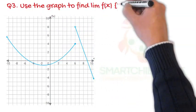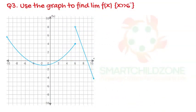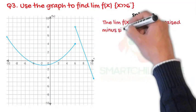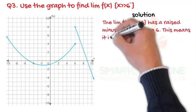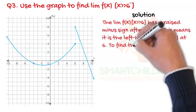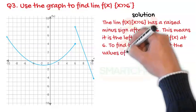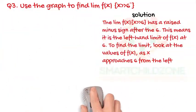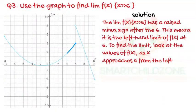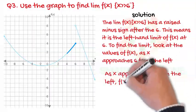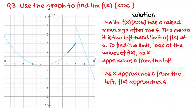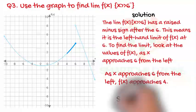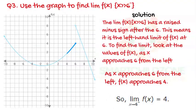To find the left-hand limit of f(x) at six: the limit of f(x) as x approaches six has a raised minus sign after the six, meaning it is the left-hand limit of f(x) at six. To find the limit, look at the values of f(x) as x approaches six from the left. As x approaches six from the left, f(x) approaches four. So the left-hand limit of f(x) as x approaches six equals four.